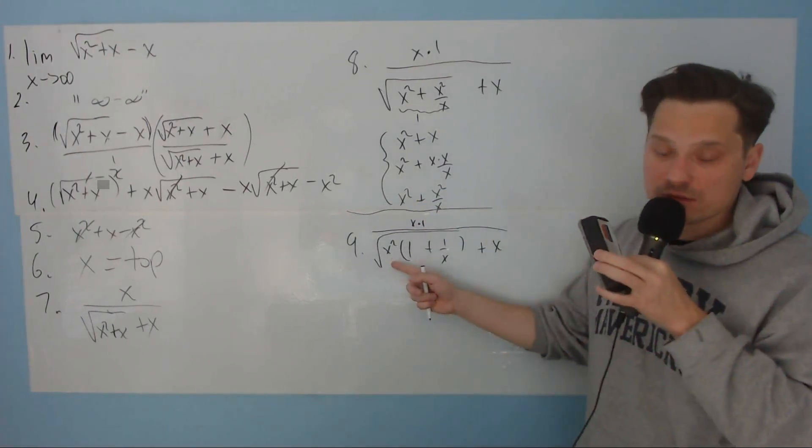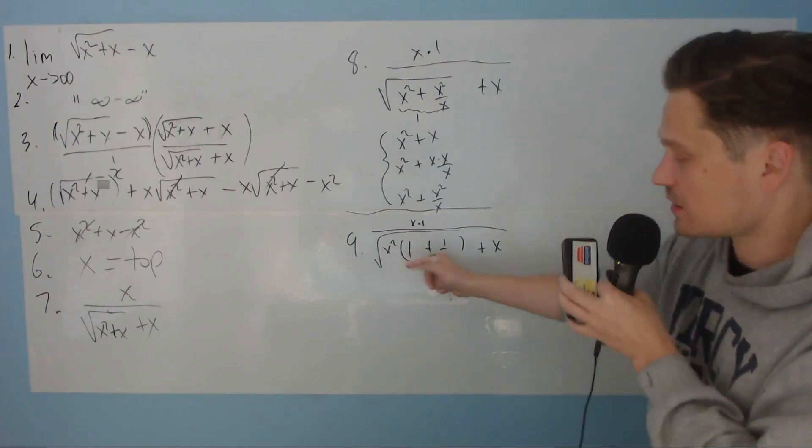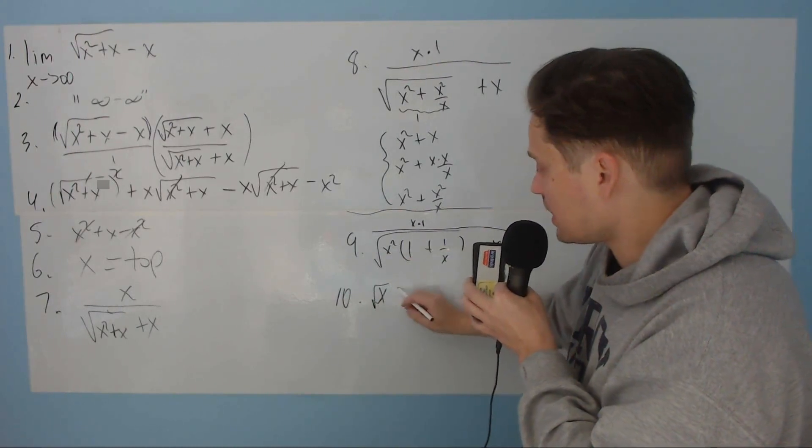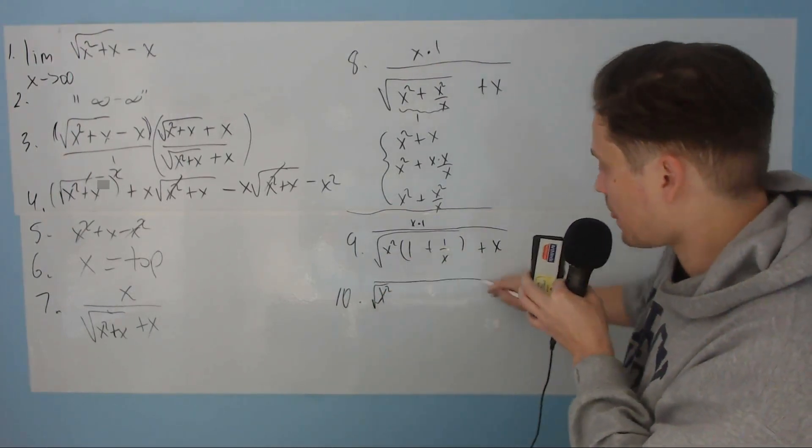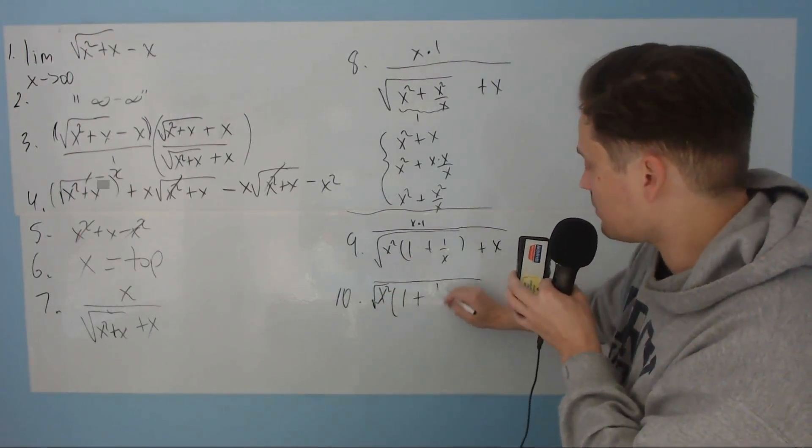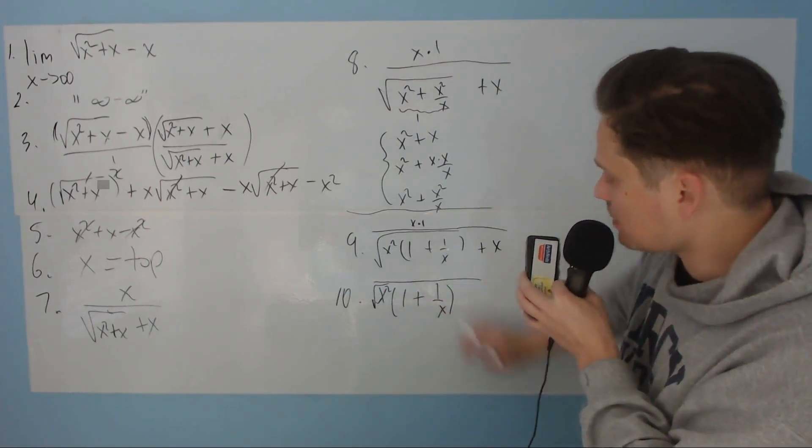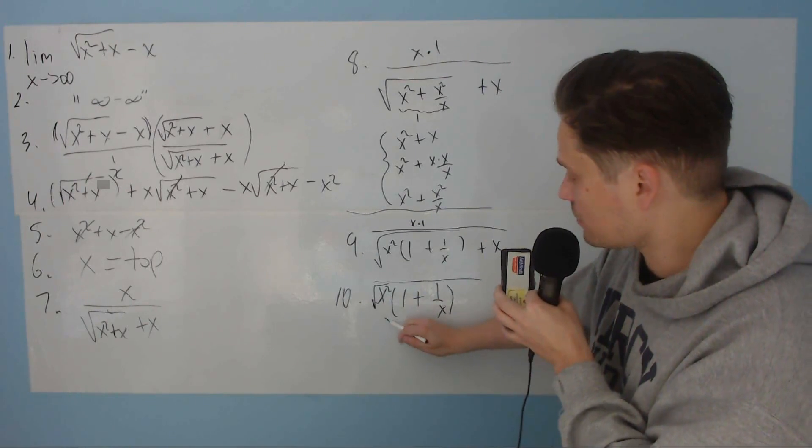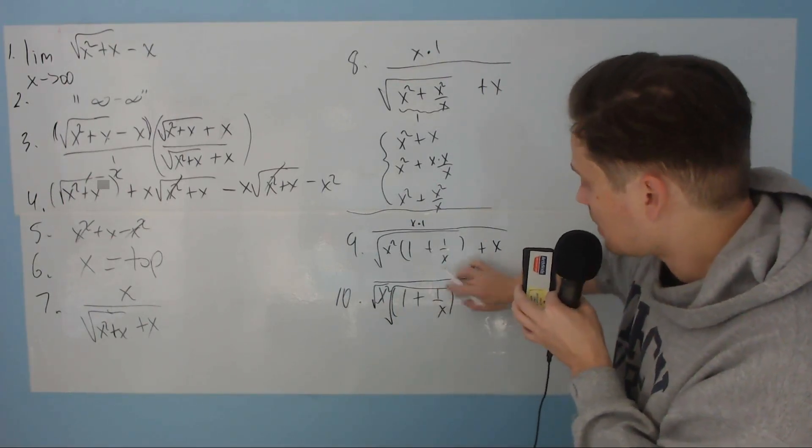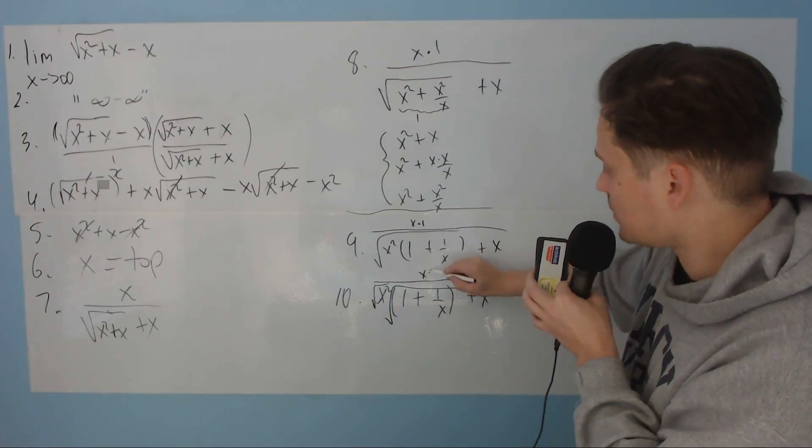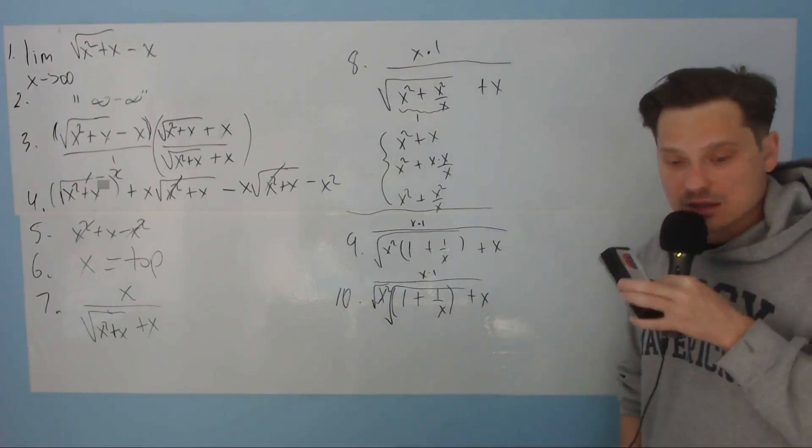Now, by basic rule of roots, you can take this x squared out. The root of x squared, I'm trying to be as detailed here as I know how to be. This second portion, 1 plus 1 over x, that's under its own root symbol. And then you still need the x at the end. Still up here, you need the x times 1.